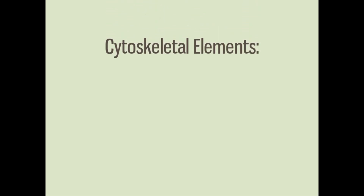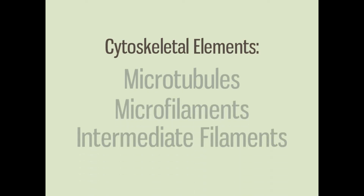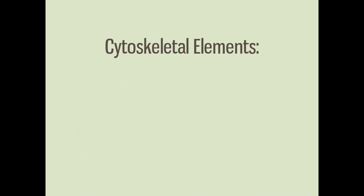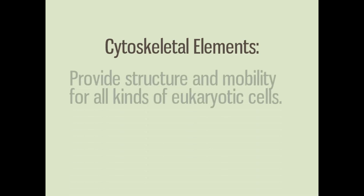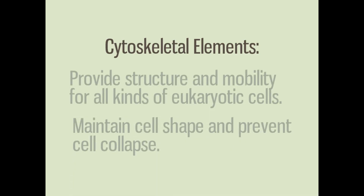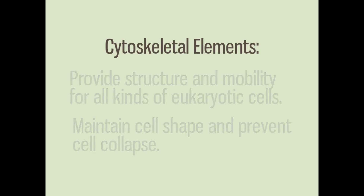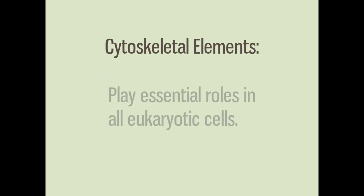Altogether, the three types of cytoskeletal elements — microtubules, microfilaments, and intermediate filaments — provide structure and mobility for all kinds of eukaryotic cells. All are involved in maintaining cell shape and preventing cells from collapse in the sometimes difficult environments of living beings. From moving chromosomes during cell division, to moving entire cells, to anchoring organelles, the cytoskeleton plays essential roles in all eukaryotic cells.